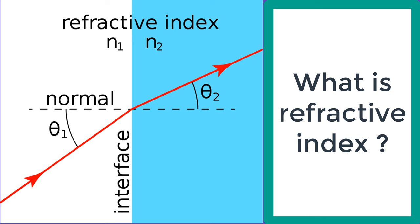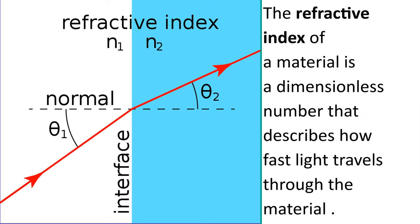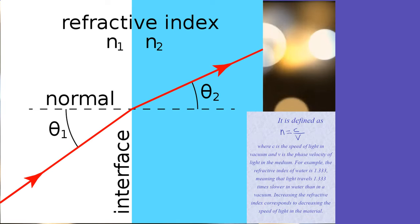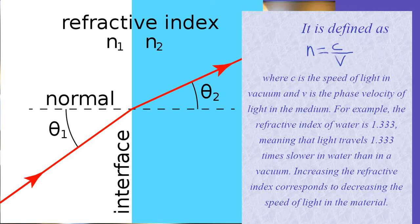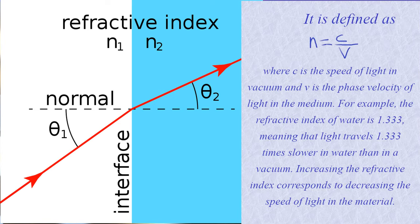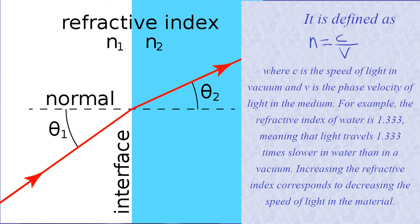What is refractive index? The refractive index of a material is a dimensionless number that describes how fast light travels through the material. It is defined as n equals c over v, where c is the speed of light in vacuum and v is the phase velocity of light in the medium.